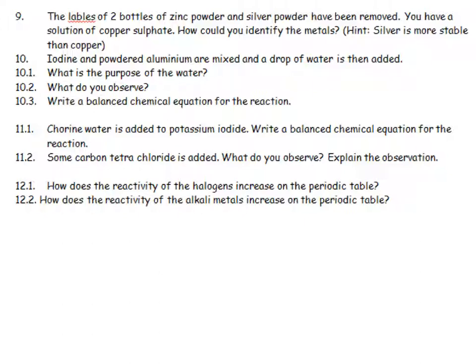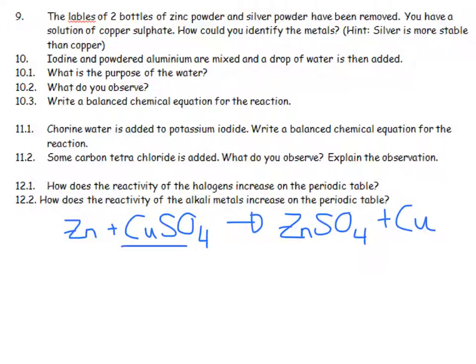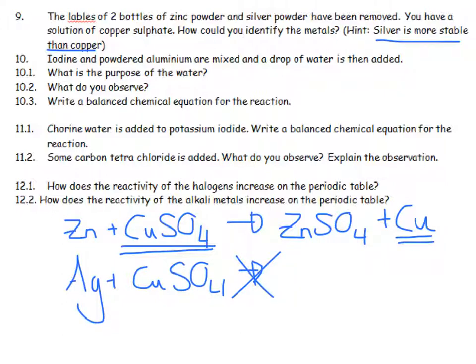Labels of zinc powder and silver powder have been removed and you've got some copper sulfate. How would you identify the metals? Now, we do know that if I put zinc and copper sulfate together, that zinc is more reactive than copper. So it's going to steal the partner and leave copper out in the cold. And we would see this blue color getting lighter and lighter and we would see a red deposit coming out, a reddish brown deposit. If on the other hand I put silver with copper sulfate, they remind me of this by the way, silver is more stable than copper. It's less reactive. More stable means less reactive. And therefore, there's going to be no reaction. And that's how you'd be able to tell them apart.